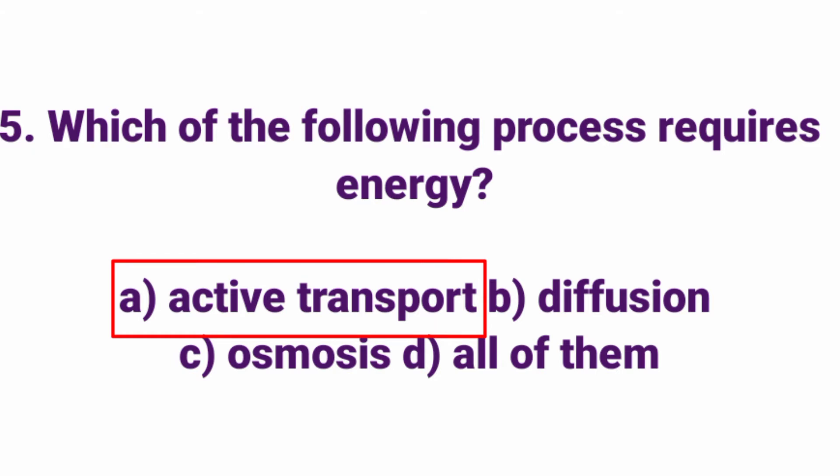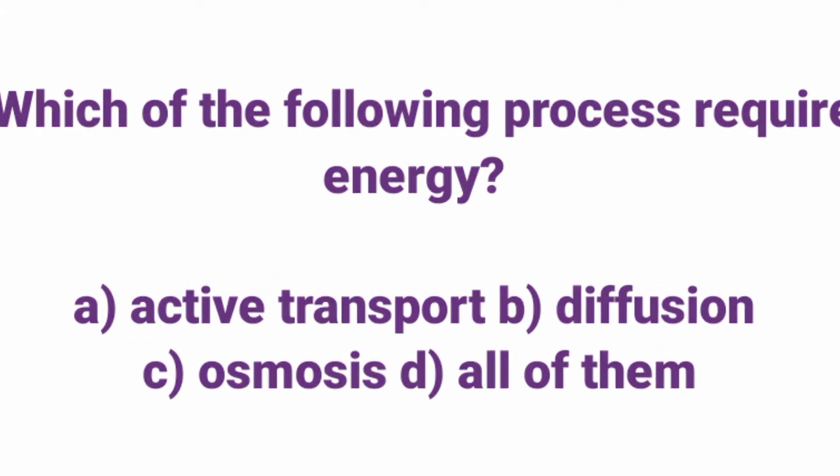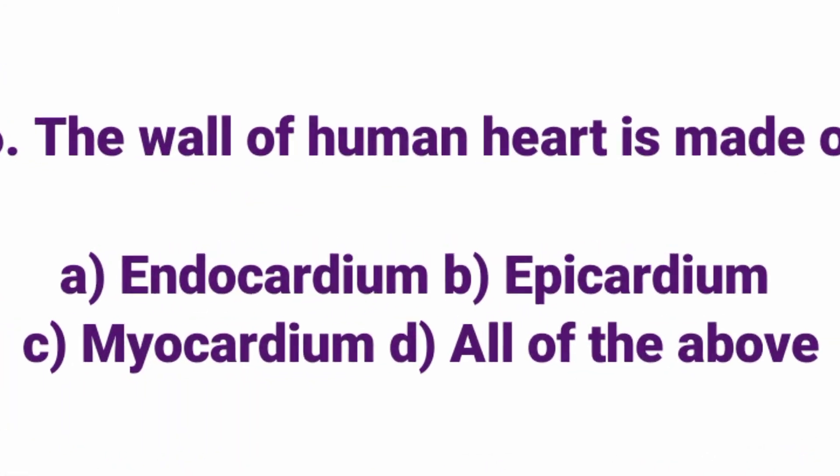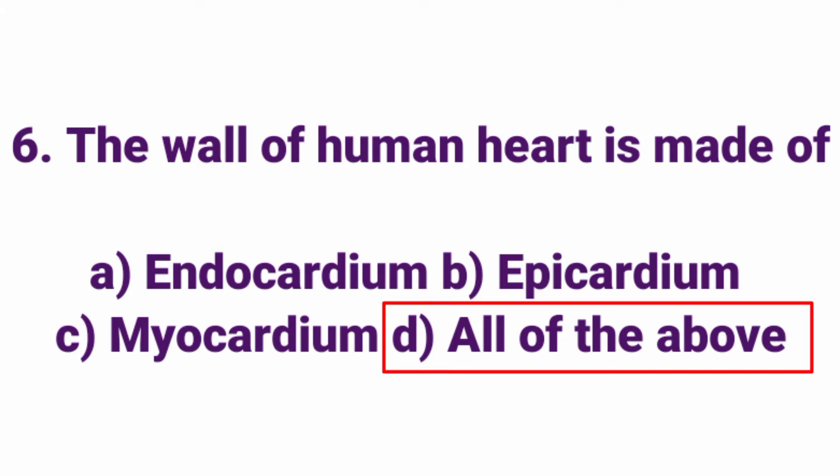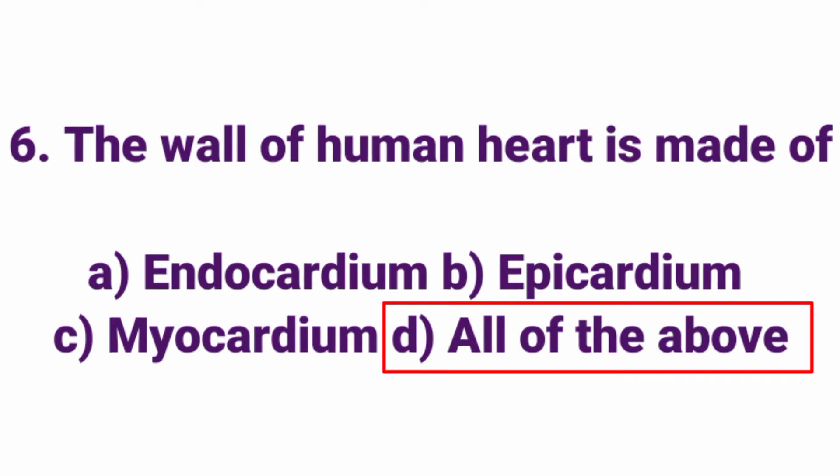Which of the following process requires energy? Answer: Option A, Active Transport. Active transport requires energy. The wall of the human heart is made of — Answer: Option D, All the above — endocardium, epicardium, and myocardium. So Option D, All the above.